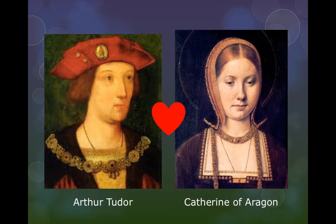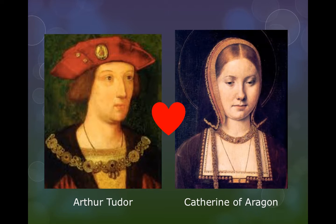Arthur and Catherine get married, and this is supposed to create an alliance between England and Spain. Spain was a major, major world power at that time — probably the top dog in Europe because they were very strong financially and had great success with exploration. We'll talk about that more in our next unit. They were very much becoming one of the early superpowers of Europe. So naturally, England, which is still kind of an up-and-coming country at that time, wanted to ally themselves with Spain, and this marriage was to create that alliance.